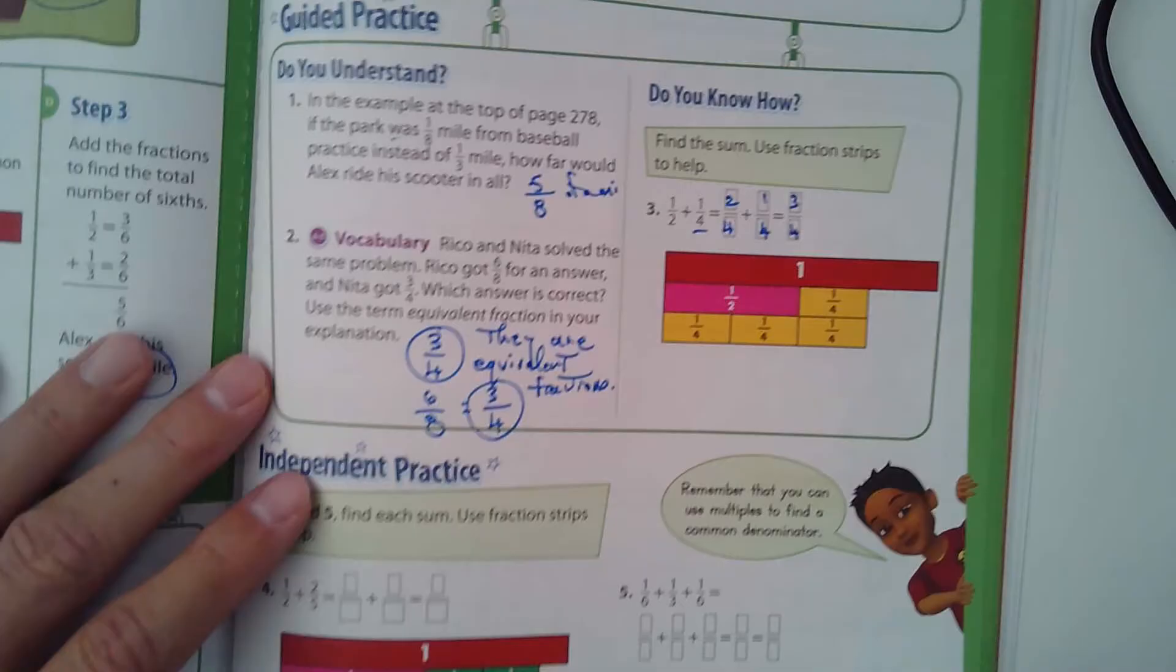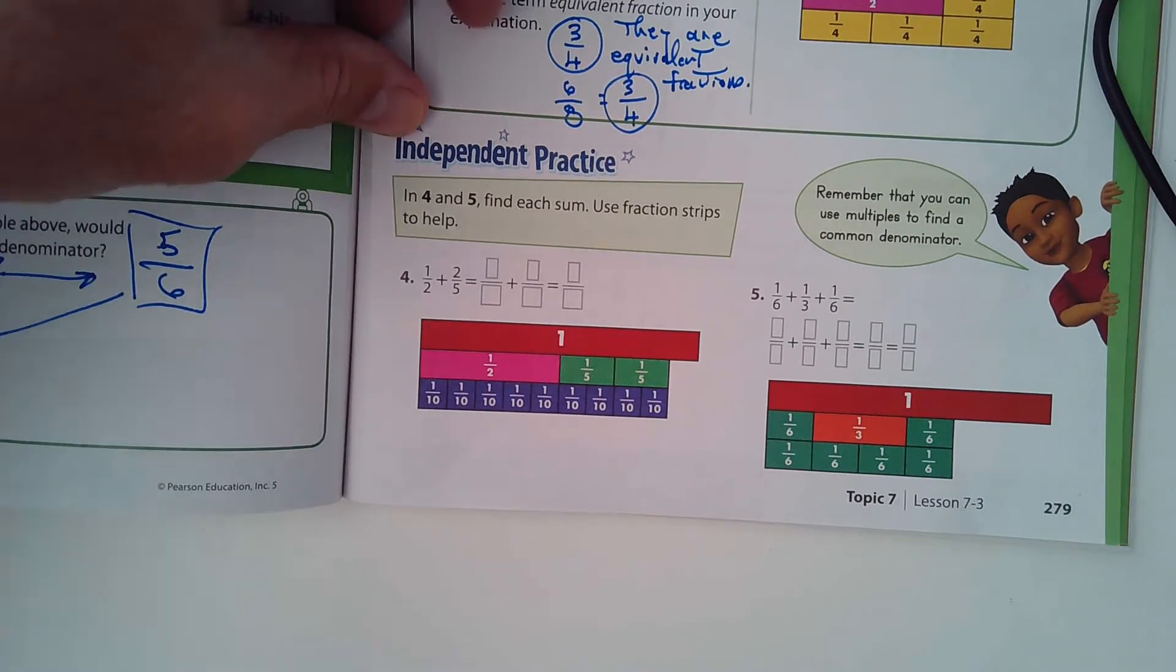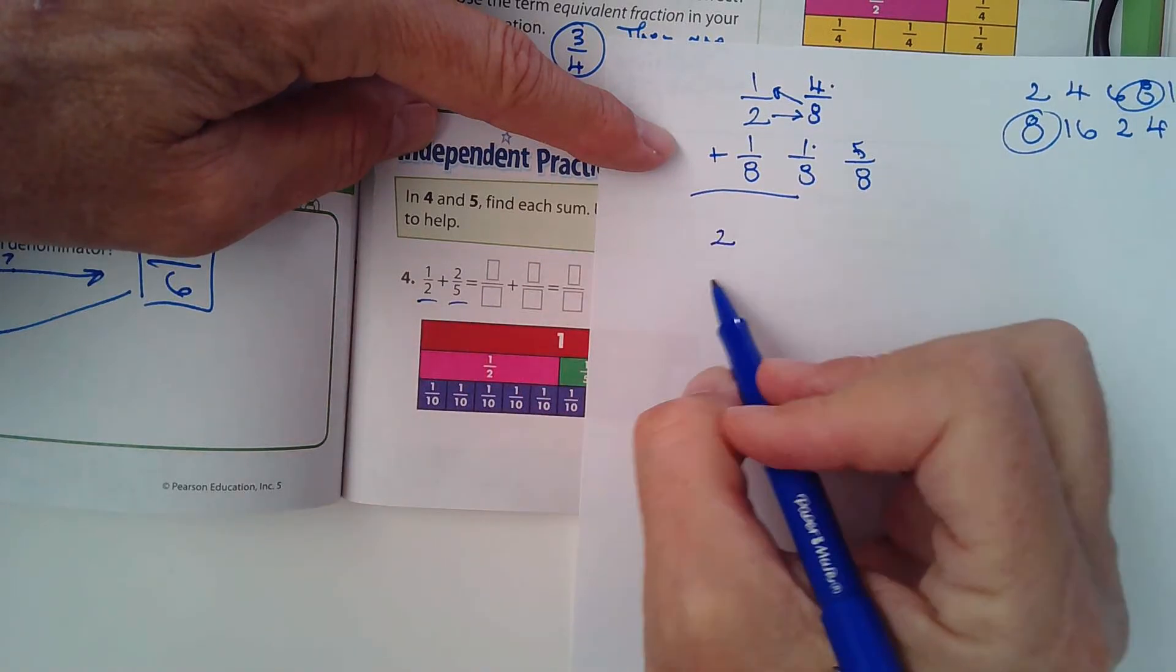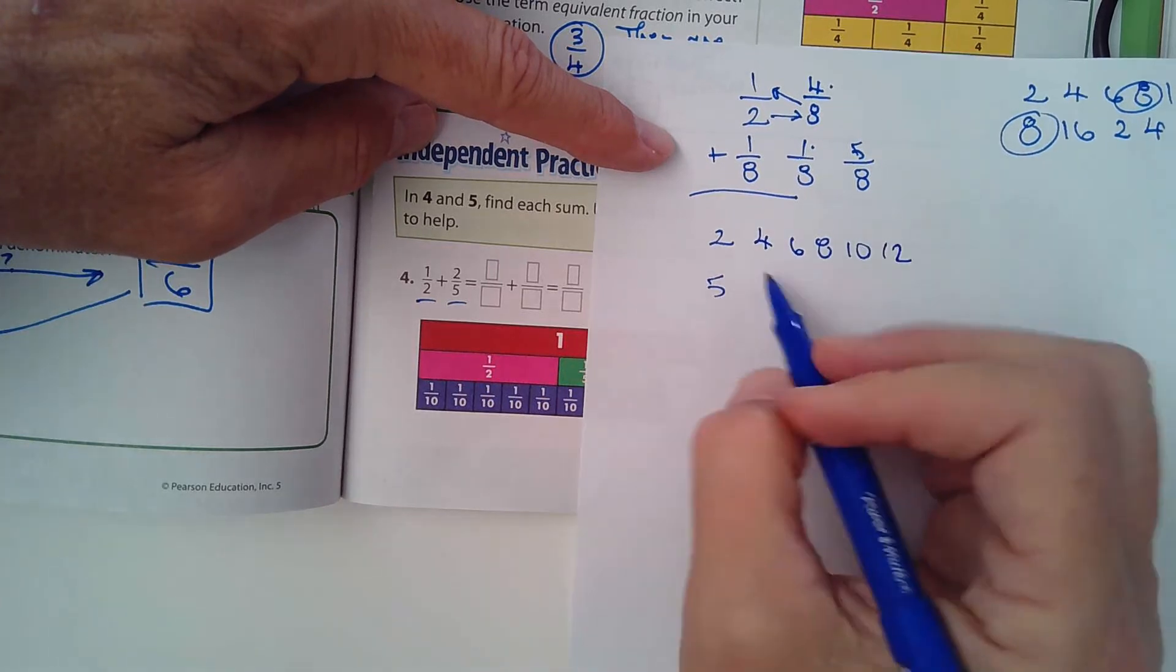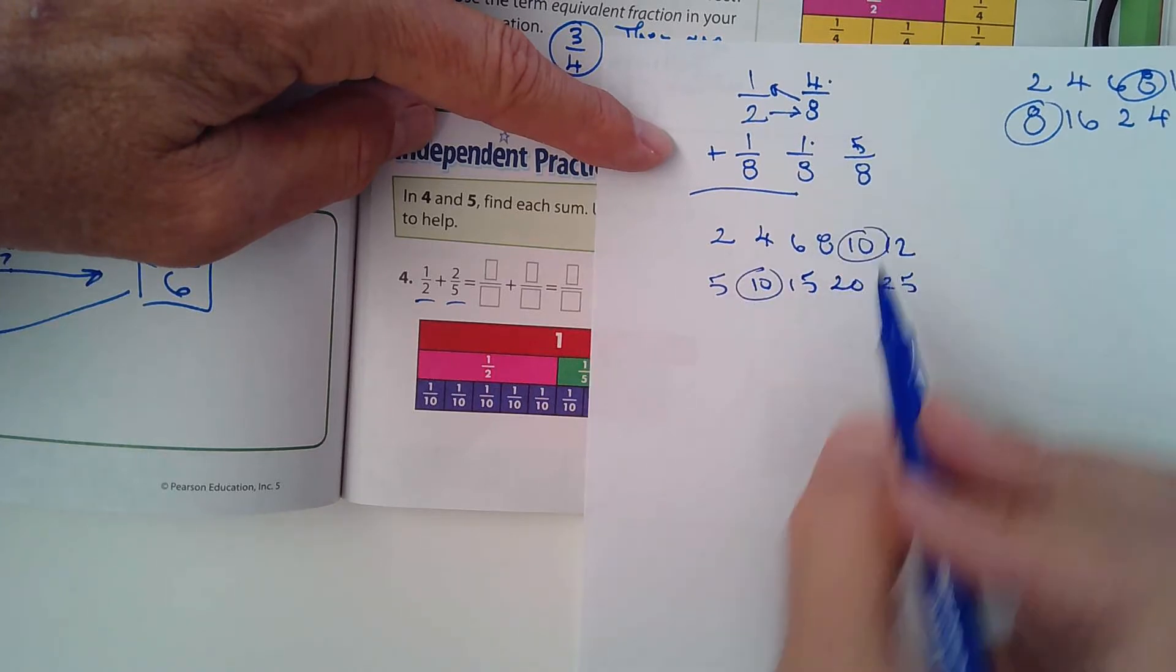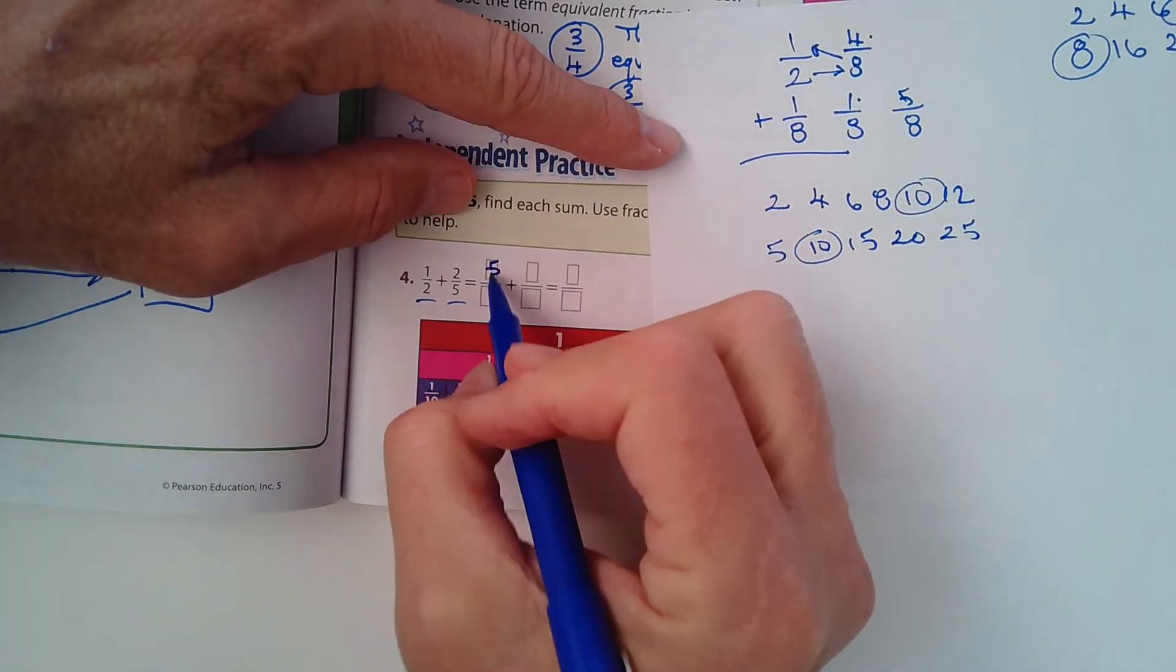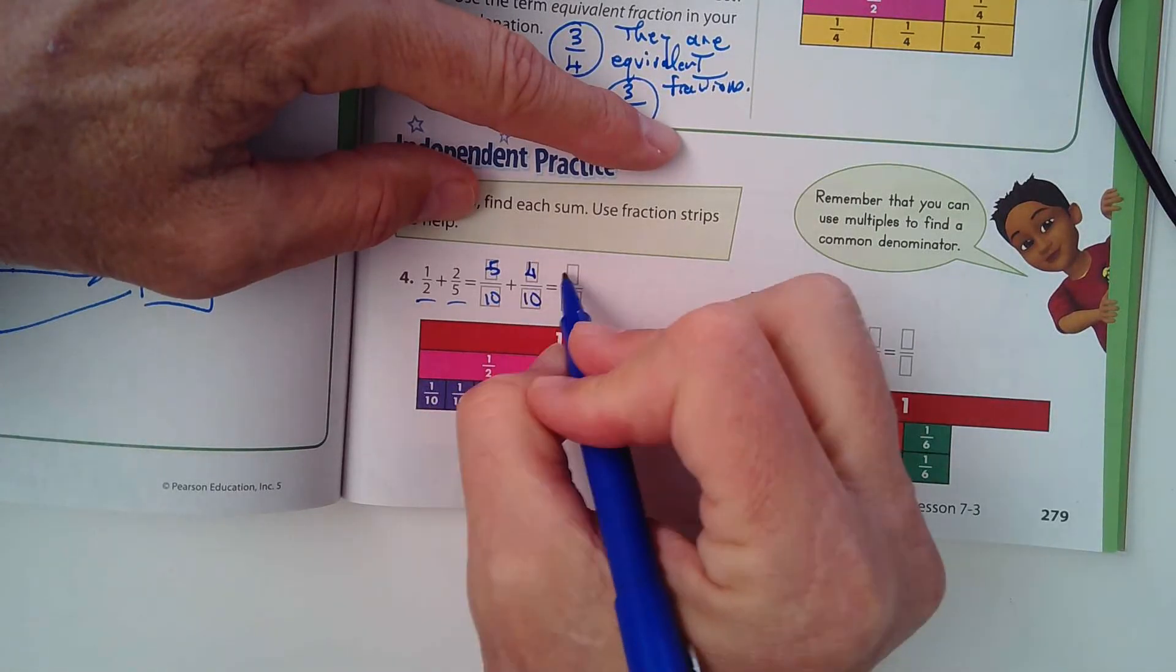Down at the bottom of the page in the independent practice, problems 4 and 5 say find each sum and use fraction strips to help. What are the denominators? 2 and 5. We could do it this way: multiples of 2 are 2, 4, 6, 8, 10, 12. Multiples of 5 are 5, 10, 15, 20, 25. You've seen any matches here? Yeah, there's a 10 and there's a 10, so the smallest common denominator would be 10. This would be 5/10, and this one would be 4/10, so then you'd add up the two on the top and it's 9/10.